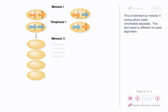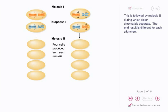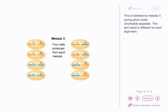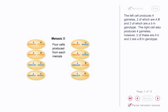This is followed by meiosis II, during which sister chromatids separate. The end result is different for each alignment. The left cell produces four gametes, two of which are big A, big B, and two of which are little a, little b in genotype.